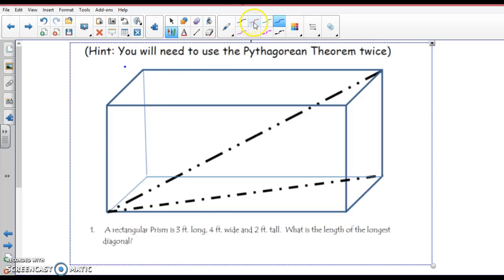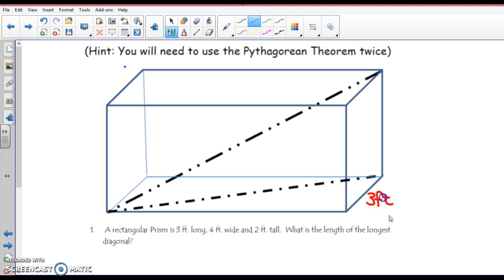We're going to do this problem. It says a rectangular bridge is 3 feet long, 4 feet wide, and 2 feet tall. What is the length of the longest diagonal?